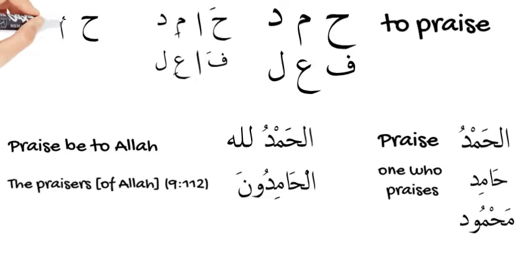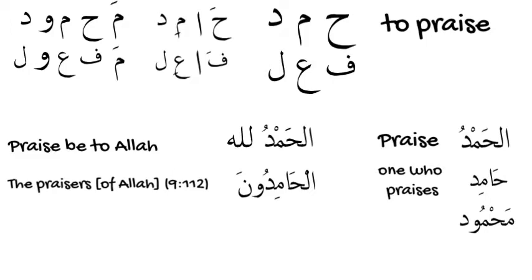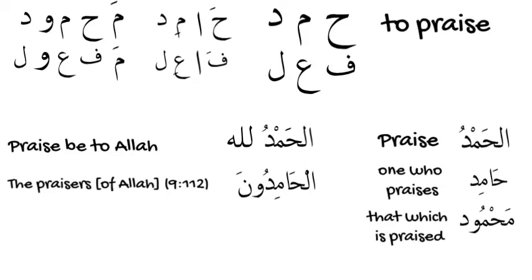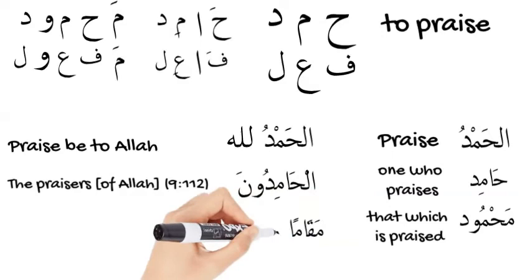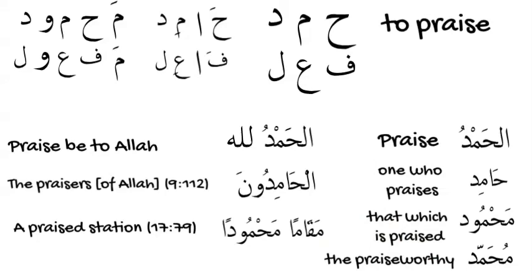Mahmood is that which is praised. Mahmood is similar to maf'ul. Hamada is like fa'ala, and if we add a meem with a fatha before the ha and a waw after the second letter, that would be similar to adding a meem with a fatha before the fa' of maf'ul and a waw after the ayn. So mahmood has the same pattern as maf'ul, meaning the person who is praised — that which is praised. An example would be maqaman mahmoodah, meaning a praised station, in ayah 79 of Surah Al-Isra.